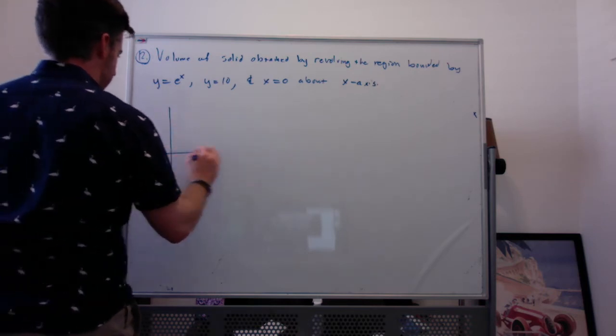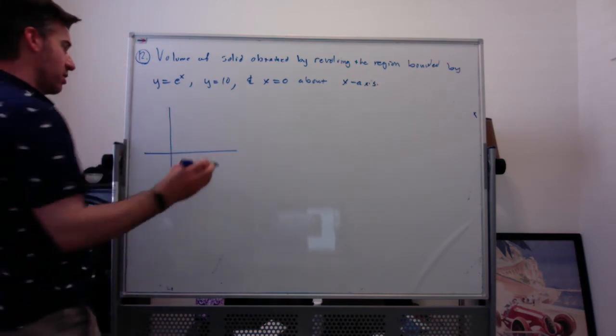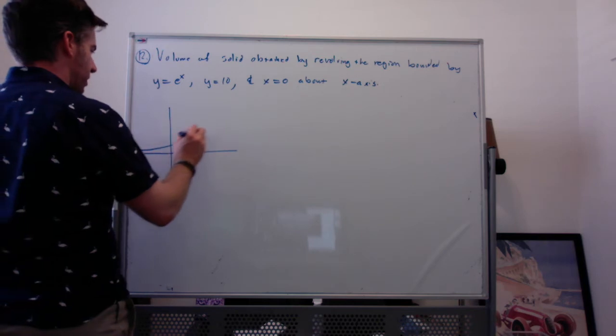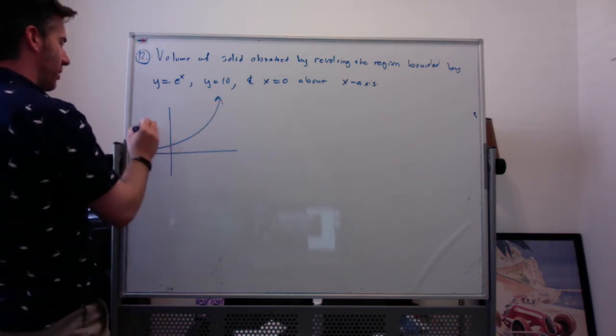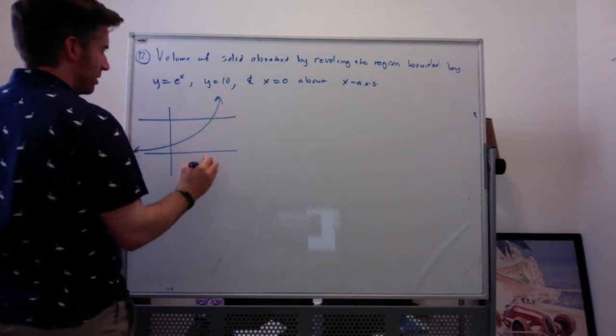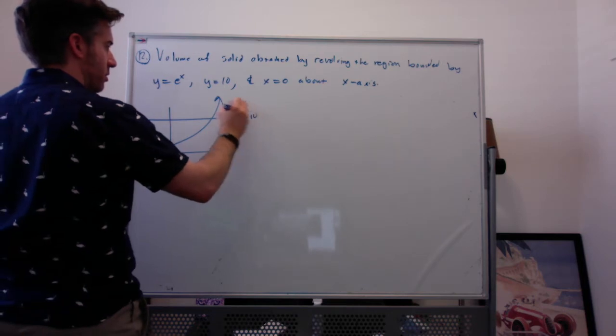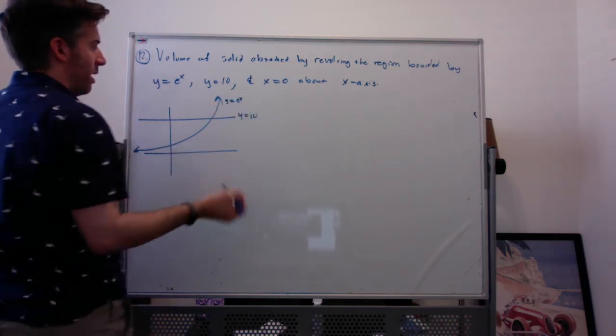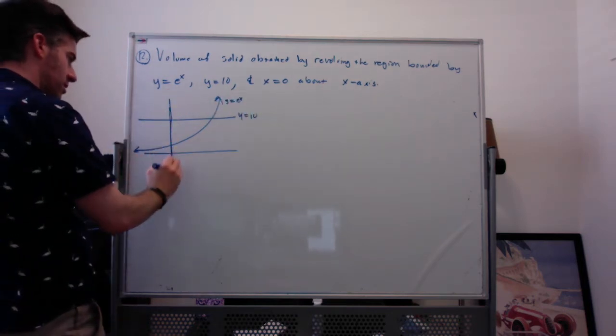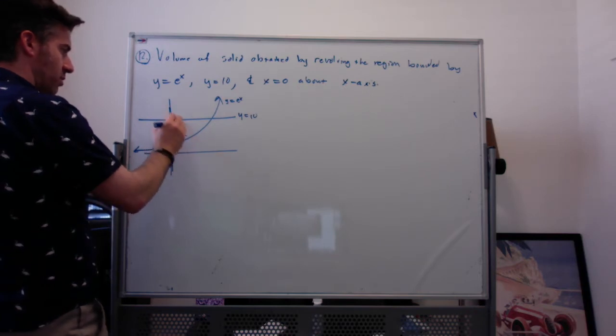Again, I think for these volume ones, it's pretty necessary to draw the region. So y equals e to the x looks like this, y equals 10 looks like this, and x equals 0 looks like this. So here is my region.